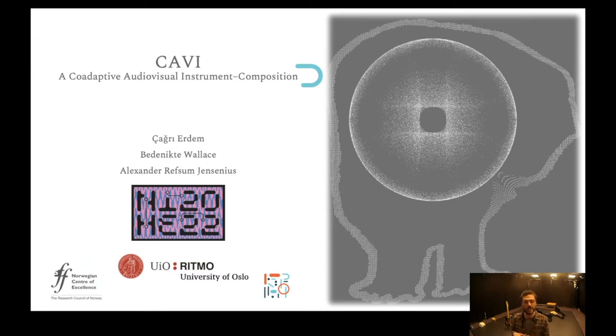Okay, my name is Çağrı Erdem and today I will tell you about a system we developed called CAVI, which is an audiovisual instrument that uses deep learning to generate control signals based on the performer's body movement.